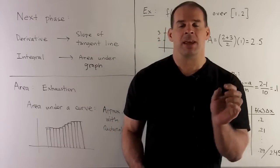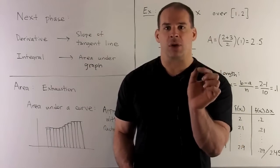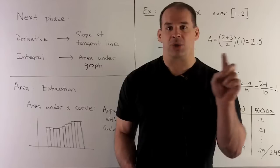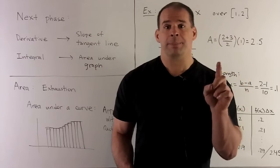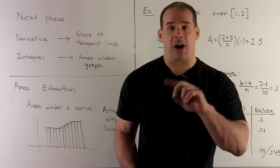So if our function's nice, as we let those bases go down to zero, we take the sum of the areas of the rectangles, take the limit, that should go to the area of the region.